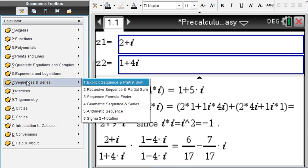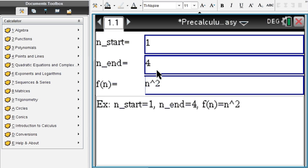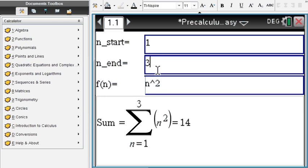For sequences and series, say you want to do sigma notation—no problem. Enter your function, like n², enter lower and upper bounds, and you arrive at your final answer.